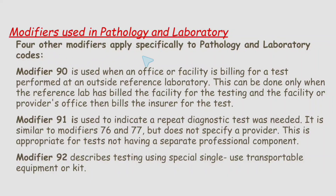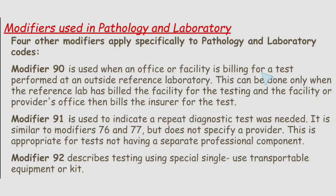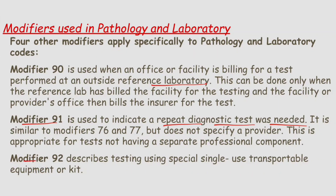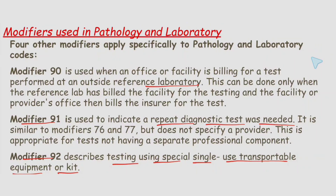There are four other modifiers that apply specifically to pathology and laboratory codes. Modifier 90 is used when an office or facility is billing for a test performed at an outside reference laboratory. Modifier 91 is used to indicate a repeat diagnostic test was needed. Modifier 92 is for testing using special single-use transportable equipment or a kit.